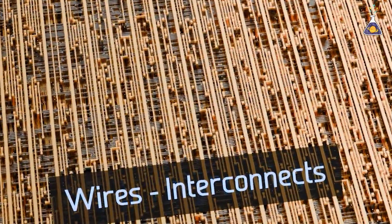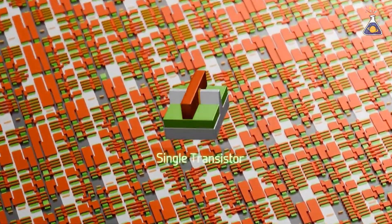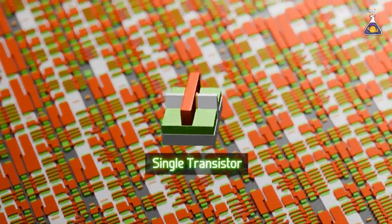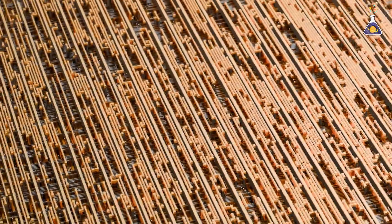Like a faucet controlling the flow of water, a transistor precisely regulates the flow of electricity. The more transistors there are, the faster computations become, and the more energy-efficient the system gets.